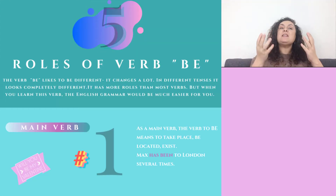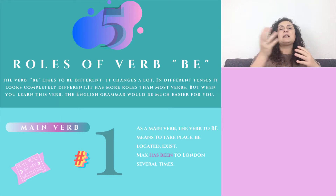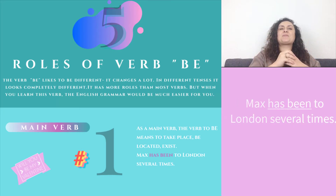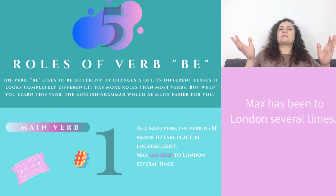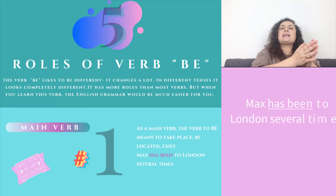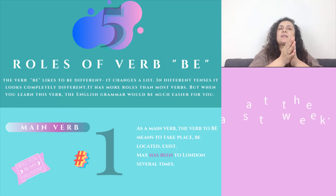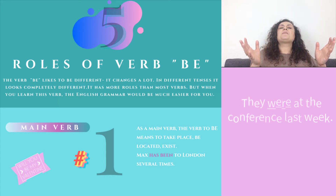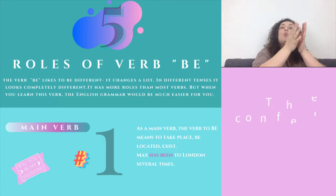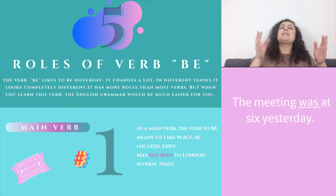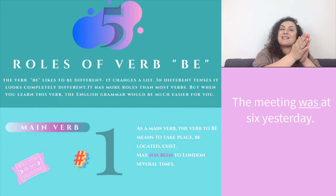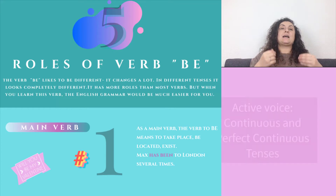As a main verb, the verb to be means to take place, to be located, or to exist. For example: 'Max has been to London several times' — has been. 'They were at the conference last week' — were. 'The meeting was at 6 yesterday' — was.